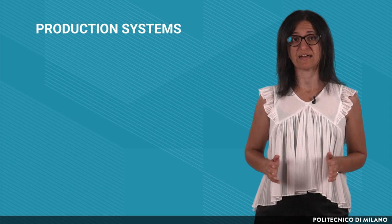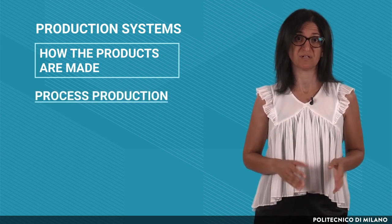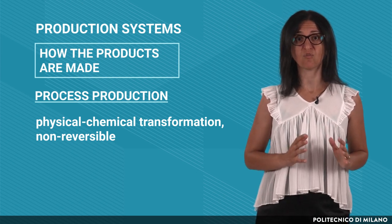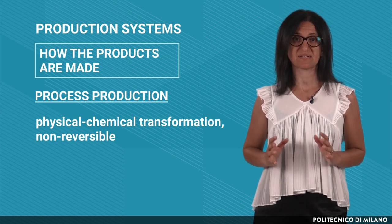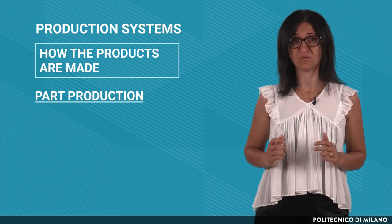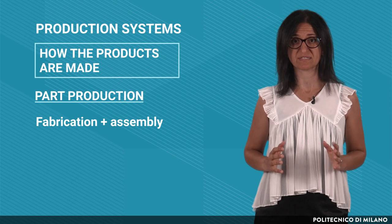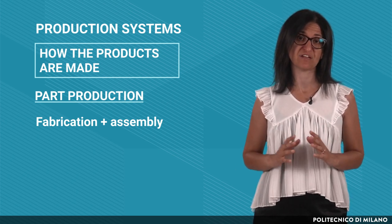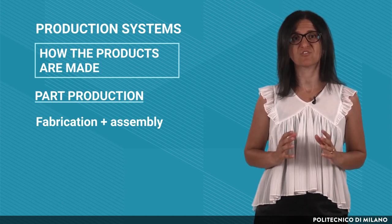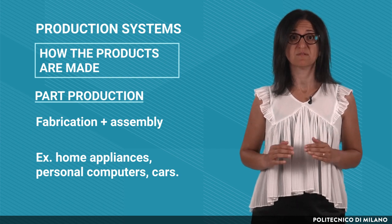Moreover, production systems can also be classified based on how the products are made. We can distinguish among process production, in which the products undergo physical and chemical transformations that are not reversible. Therefore, the original raw materials can't be obtained back from the final products. Some examples are the production of paper, glass, fabric and cakes. Then we have part production, also referred to as manufacturing production, which comprises fabrication and assembly. Fabrication is intended to produce components and parts that are then assembled to obtain the finished products. During fabrication, irreversible physical and morphological transformations are performed, but the original raw materials can usually be recognized in the finished products. Some examples are the production of home appliances, personal computers and cars.